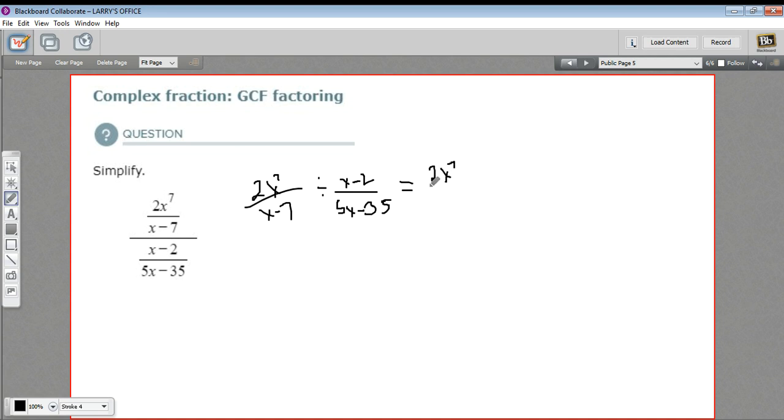So we have 2x to the seventh over x minus 7, times 5x minus 35 over x minus 2. Now at this stage, you could jump right ahead and do the multiplication, but it's always going to help to look for factors that you could cancel.